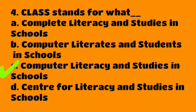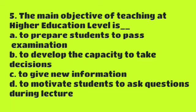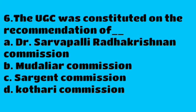Question number five: the main objective of teaching at higher education level is — the correct answer is option B — to develop the capacity to take decisions. The main objective of teaching at higher education level is to develop the capacity to take decisions.